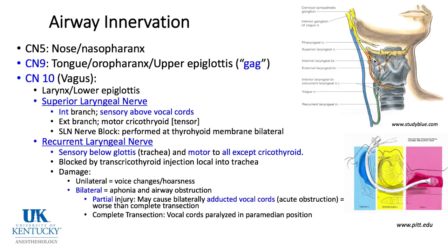Unilateral recurrent laryngeal nerve damage causes voice changes and hoarseness, but bilateral damage is more serious. With partial bilateral injury, the vocal cords can be stuck in an adducted position — together — causing acute obstruction. This is worse than complete bilateral transection, where cords can flap in a paramedian position and air can move in and out. With bilateral partial injury, a tracheostomy may be immediately required.